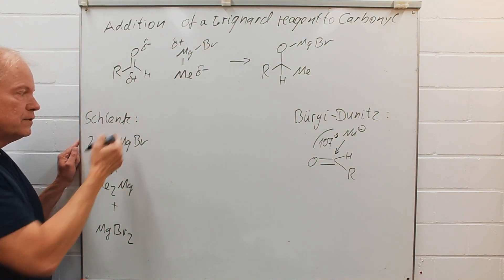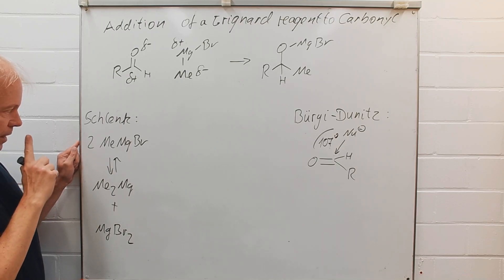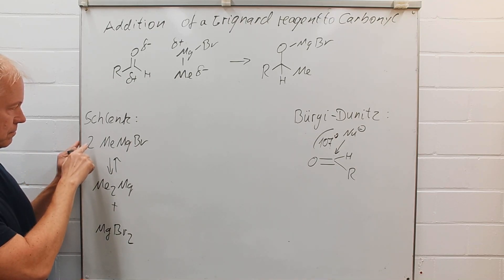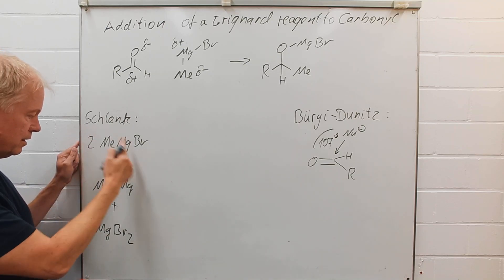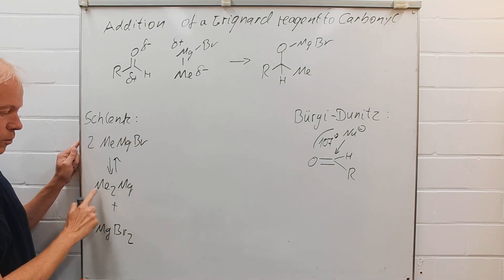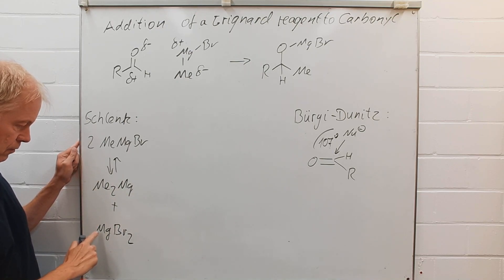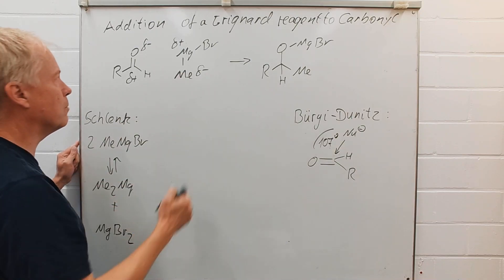In the Schlenk equilibrium, we have two equivalents of methyl magnesium bromide in equilibrium with one equivalent of dimethyl magnesium and one equivalent of magnesium bromide. And this can help to solve our problem.